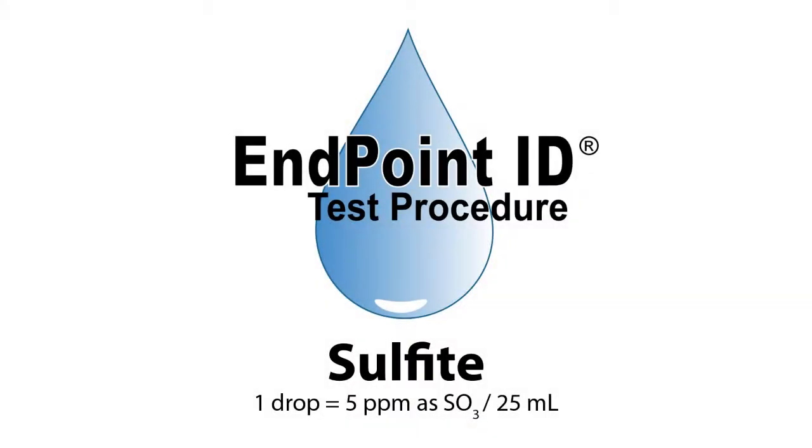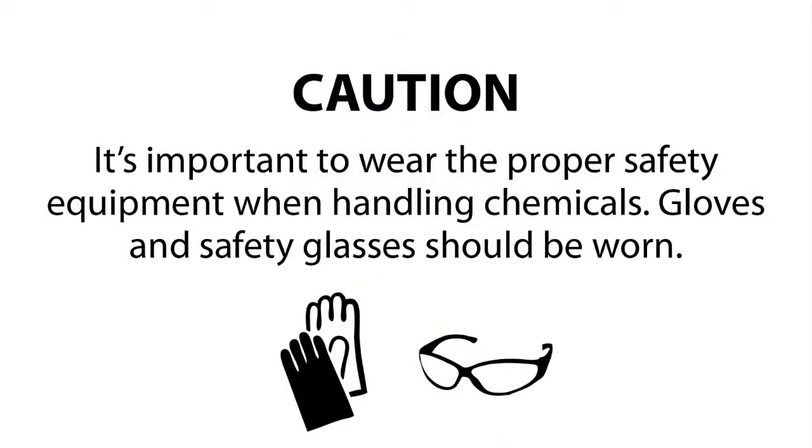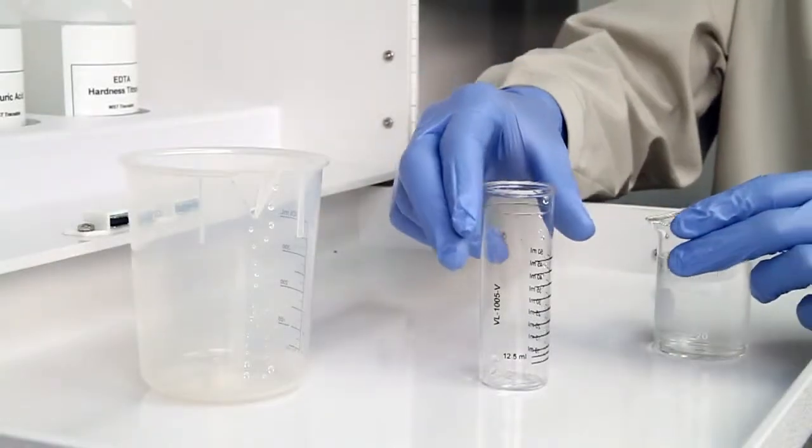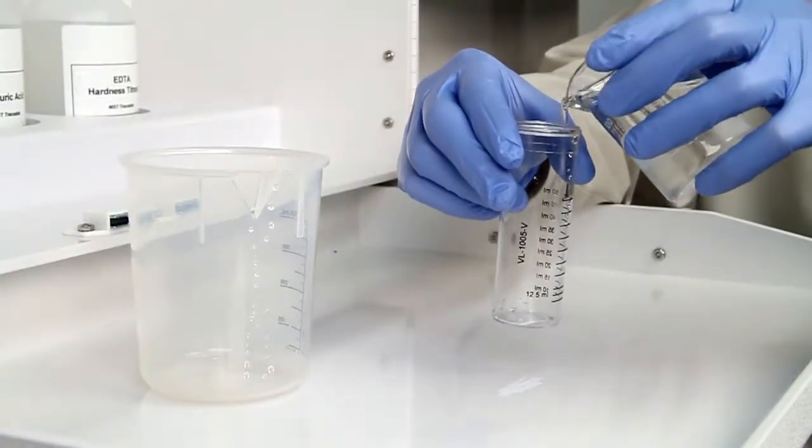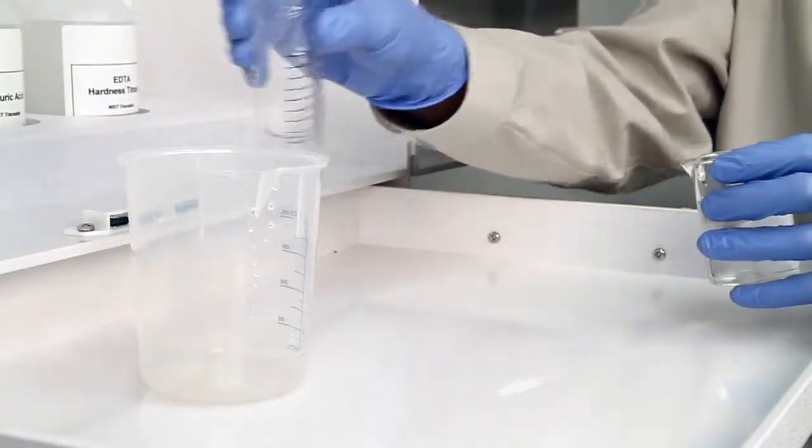This is a demonstration of a sulfite drop count test kit using endpoint ID procedures. The first step according to the endpoint ID procedure is to collect an accurate sample. The smallest change in sample size will lead to inaccurate results.